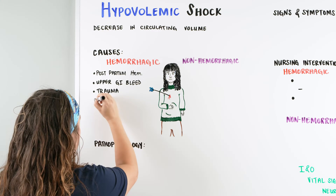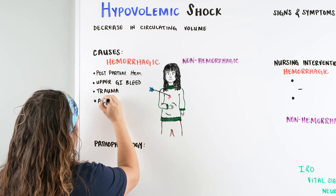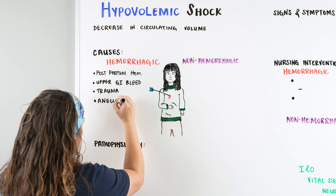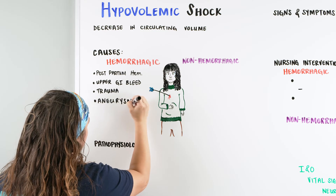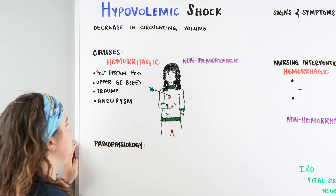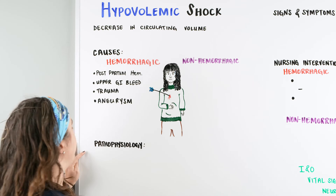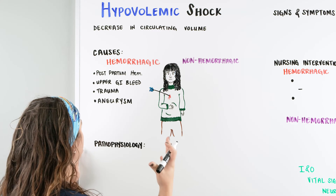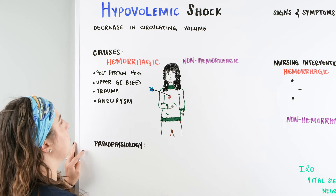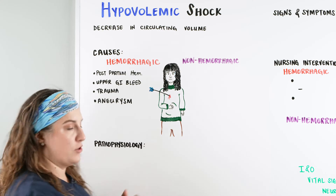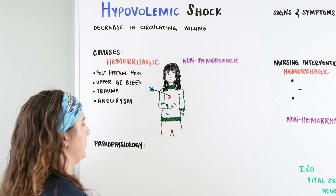And then there's one more we're going to talk about, and that is aneurysm. So if a patient has an aneurysm in their head or an aneurysm in their abdomen and they have a ruptured aneurysm, that can also cause them to have hemorrhage or a hypovolemic shock situation.